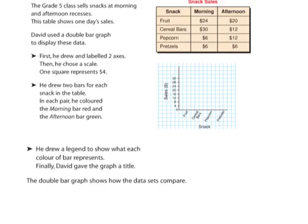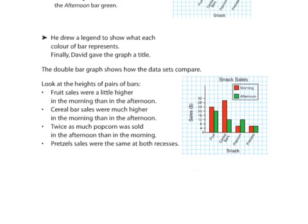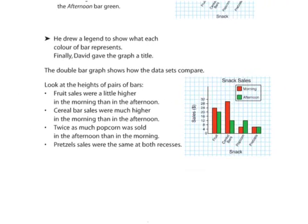So he's going to draw two bars for each snack in the table, one is going to be for morning and one is going to be for afternoon. Morning bar is going to be red, afternoon bar is going to be green. He's going to draw a legend to show each color of the bars, and of course he's going to need a title. And here's our graph, or the graph he drew. He has a title, snack sales. He has his legend, as we said, morning and afternoon. He has two bars for each piece of data, and we can make a number of conclusions from this bar graph.